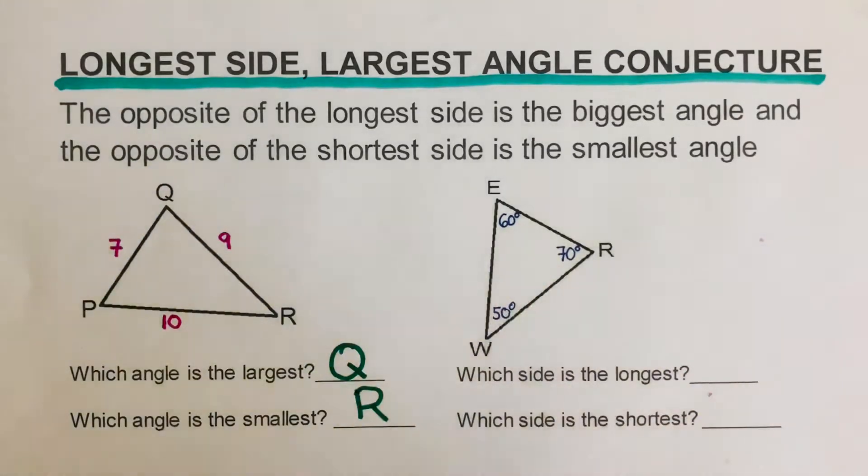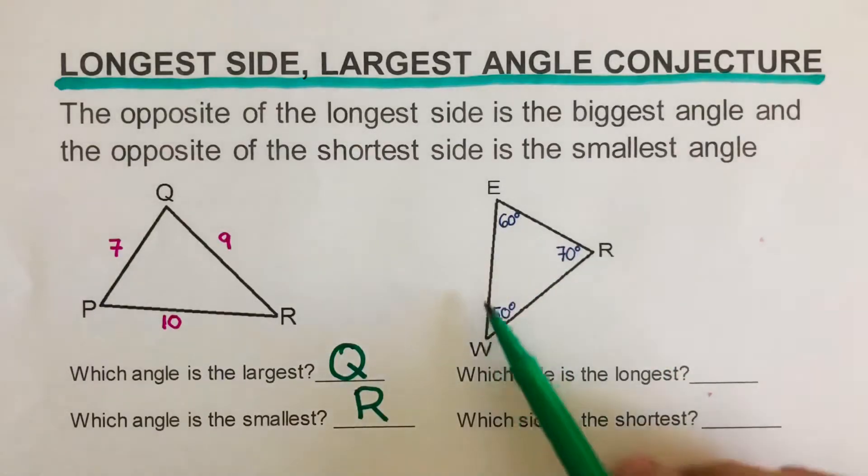Now let's try the next one. This is the other way around. We are given the angles and we need to determine which of the three sides is the longest and which is the shortest.